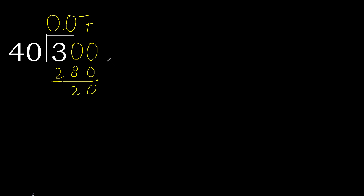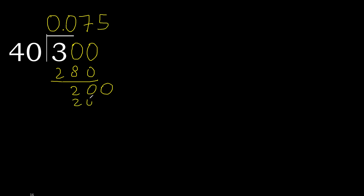Next, there is no number therefore complete — always complete with 0. Point is here. 200. 40 multiplied by 5 is 200. 200 subtract 200 is 0, therefore finish.